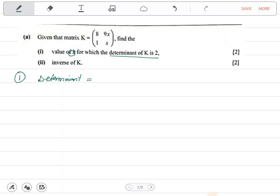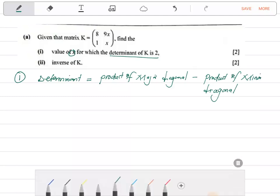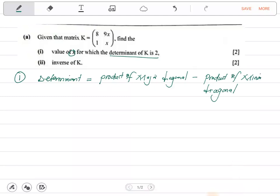Determinant is equal to the product of a major diagonal, alright, product of a major diagonal element minus the product of minor diagonal. This is how we find the determinant.